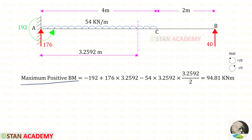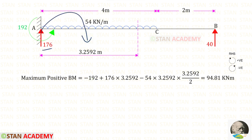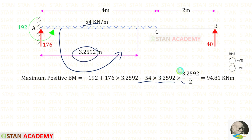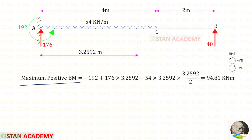Now let us find the maximum positive bending moment. Here we can use the right hand side rule. MA is acting in the anticlockwise direction so it will be negative. RA is acting in the clockwise direction so it will be positive. With the UDL, we multiply the distance and then divide by 2. For the maximum positive bending moment, we will get 94.8 kNm.